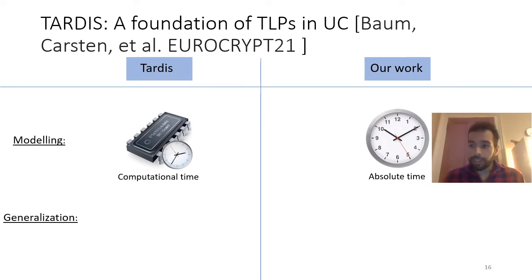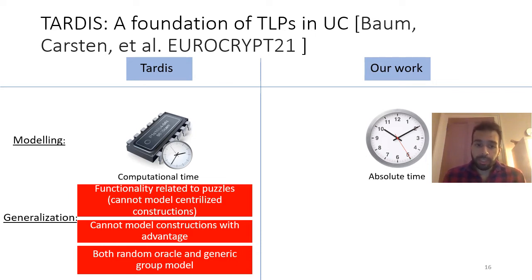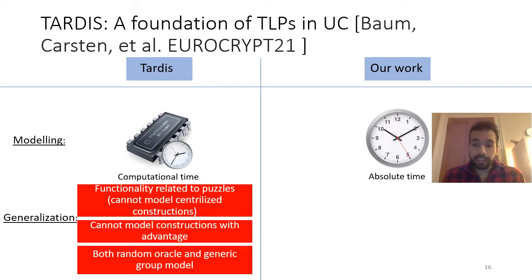Another difference is regarding generalization: the TARDIS functionality only captures time-lock encryption schemes based on computational puzzles, and cannot model centralized constructions or witness-based encryption constructions. Furthermore, their construction cannot model adversaries that possess an advantage in opening a message compared with honest parties. Specifically, in witness-based encryption constructions based on blockchain — the one I referred to earlier — because of selfish mining, the adversary can construct a witness faster than honest parties and that gives it an advantage. TARDIS cannot model this.